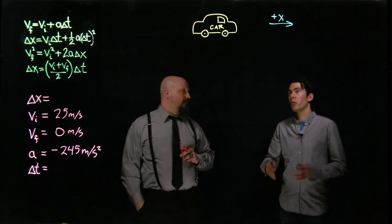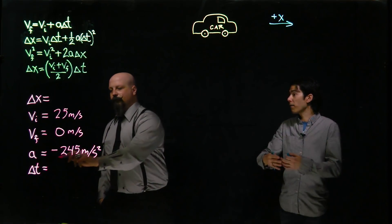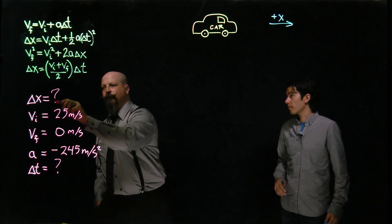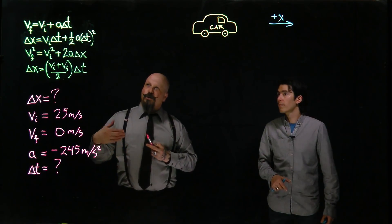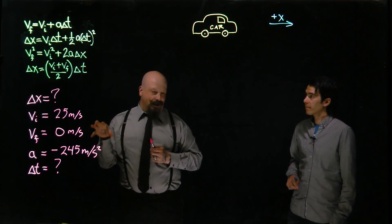So we can ask a couple questions. How quickly do you stop, and how far do you travel in that deceleration? And we don't have those values. So what we need to do is utilize our 1D kinematics equations to actually solve for these.